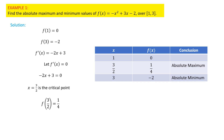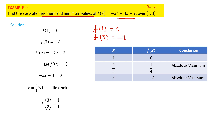First example: find the absolute maximum and absolute minimum values of f(x) = -x² + 3x - 2 over the interval [1, 3]. Here a = 1 and b = 3. First, calculate f(1) by substituting 1 into the function, which gives 0. Then substitute the endpoint 3 into the function, which gives -2.